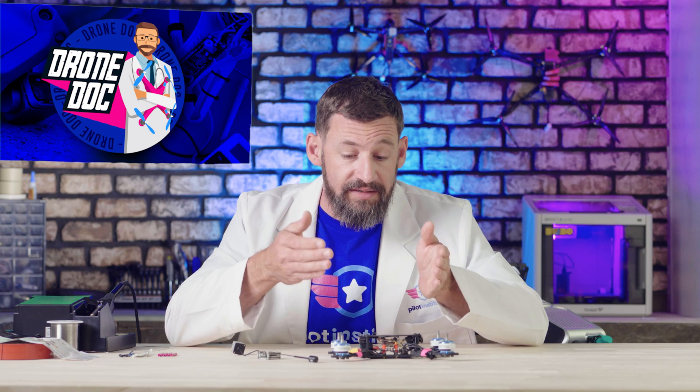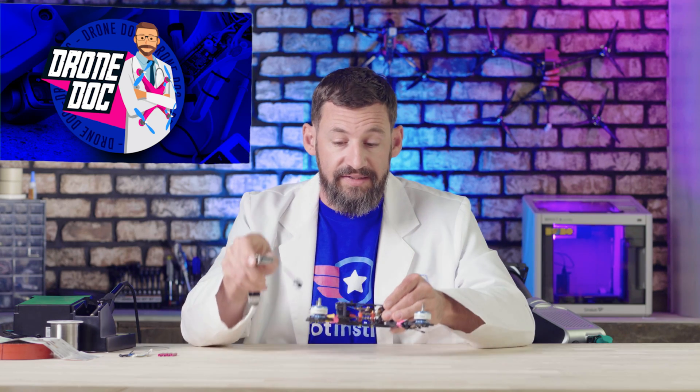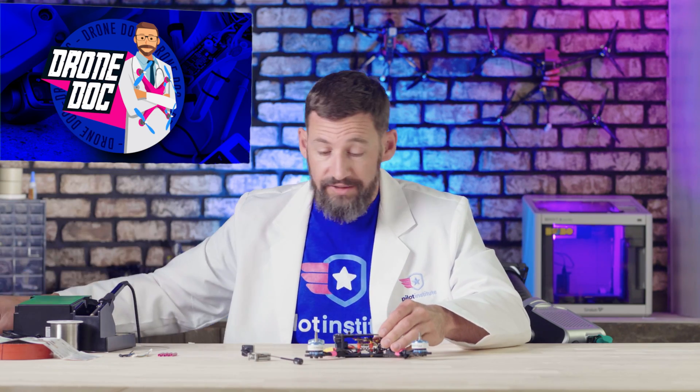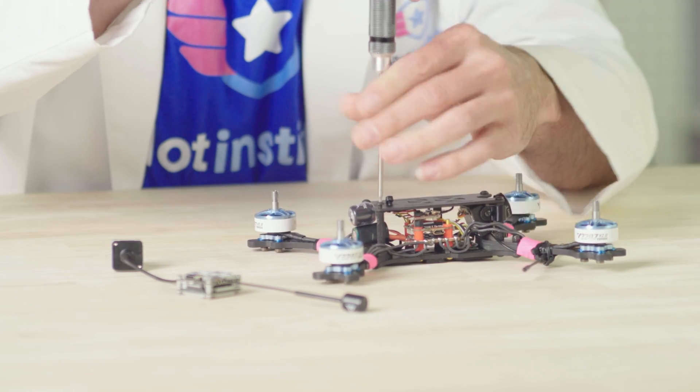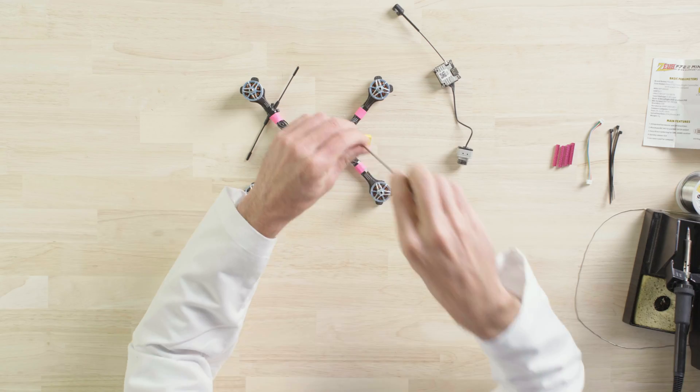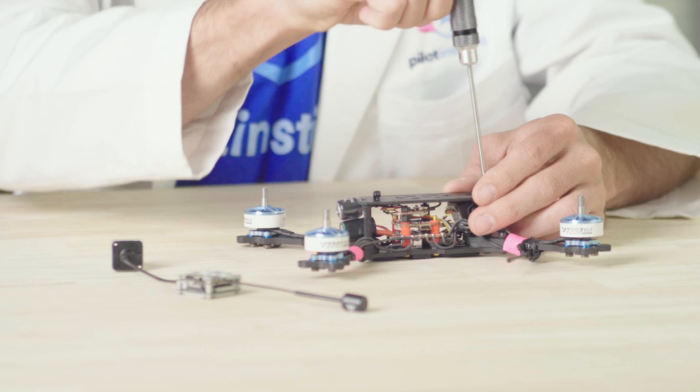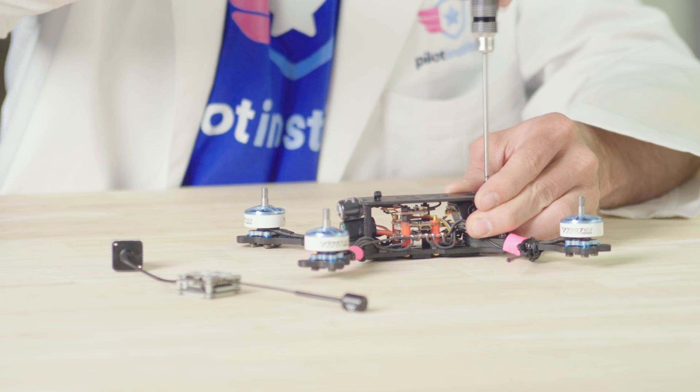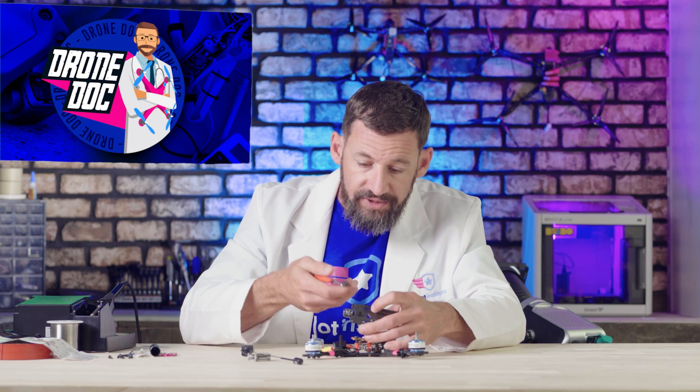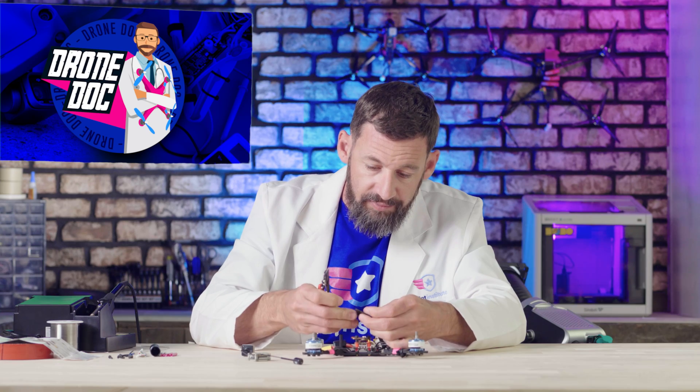So the first thing we need to do is get the top plate off because this digital system is going to fit right underneath the top plate here and we're going to route the antenna out the backside. So we'll take our 2mm driver and remove the top plate. Next we'll just cut the zip tie and remove that antenna.